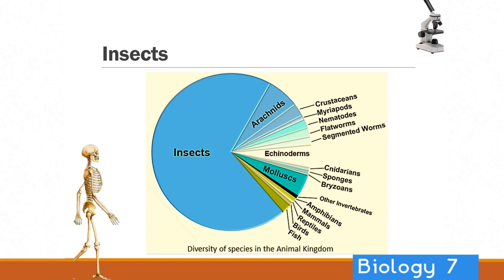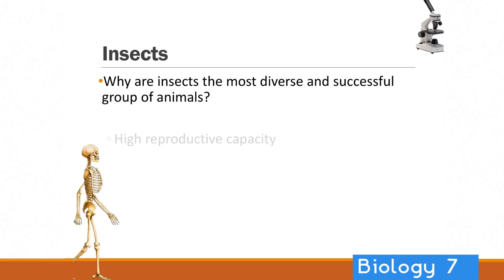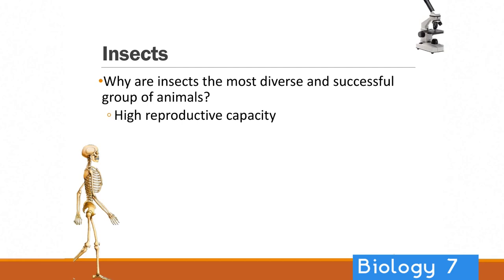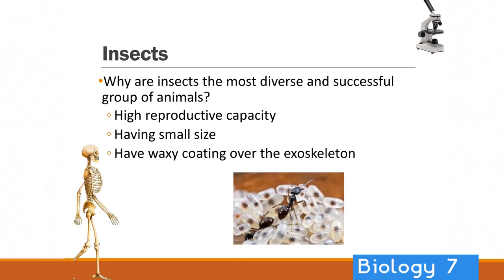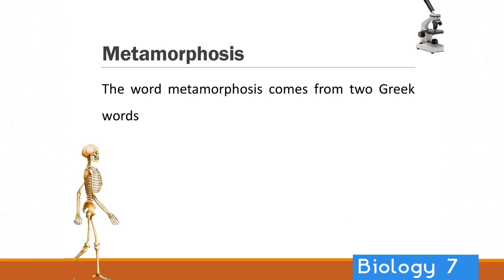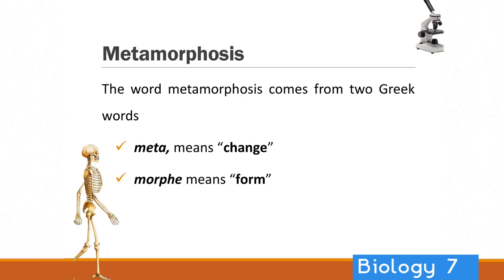So why are insects so diverse and successful? They've got a few characteristics which have helped them out. One: they've got a very high reproductive capacity — they're very good at reproducing quickly and making lots of offspring. They're small, which helps because they require fewer resources. They've got a waxy coating over their exoskeleton for protection. And they undergo a process called metamorphosis. Metamorphosis comes from two Greek words: meta means change, and morph means form — so they change form.